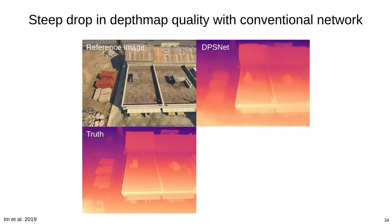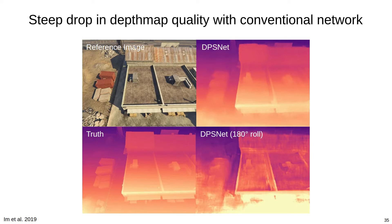Here we show an example depth map produced by DPSNet, a state-of-the-art learned MVS network from Im et al., trained on normal images. The depths produced when tested with normal images look good when compared to ground truth. However, rotating one of the test images by 180 degrees yields a steep drop in depth map quality. Remember, the network is given the same information in both instances but is not able to compensate for the simple modification of the input.